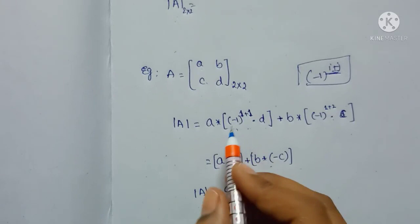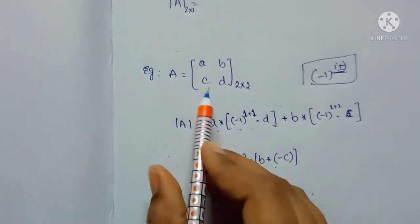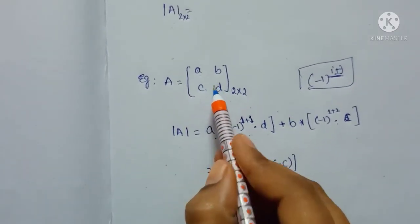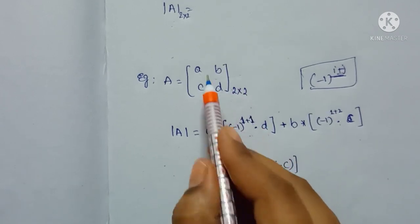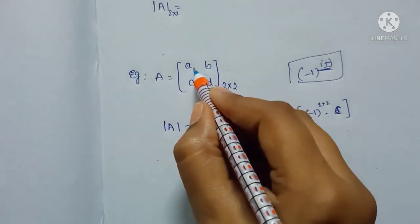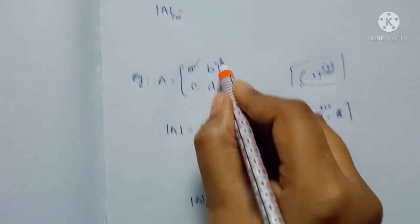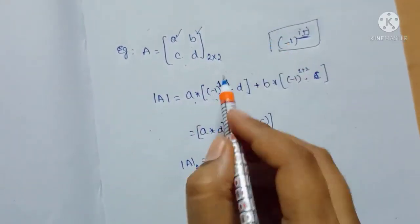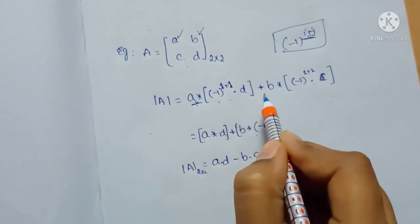If you see the matrix A, you have to select any row or any column elements. Now I select the row elements as A and B.